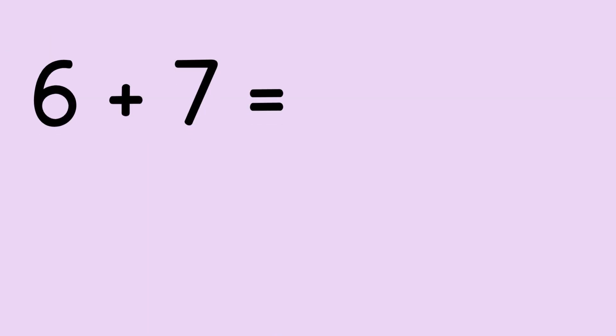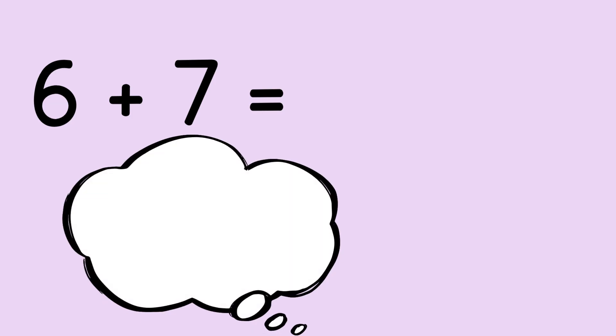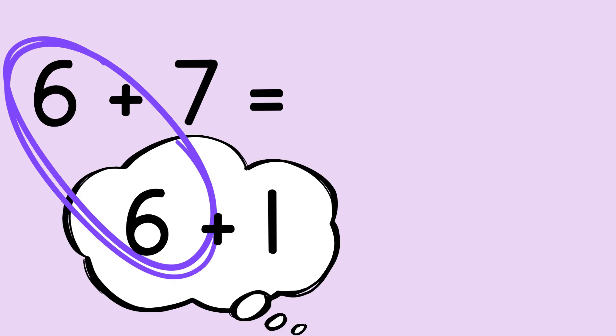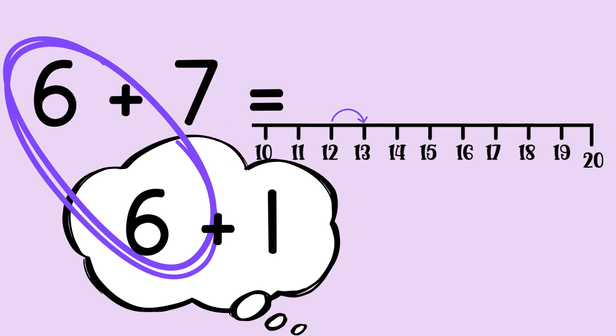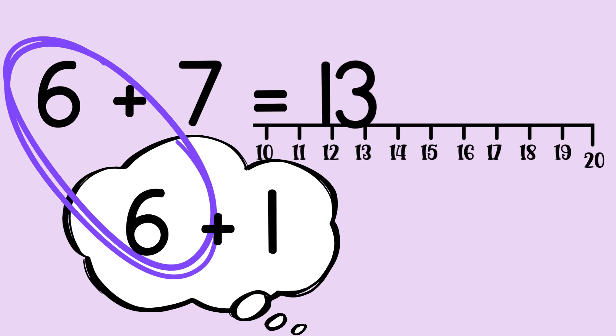Here's six plus seven. So let's think about seven as six and one. And then here's our double. Six plus six, that's 12. And then 12 plus one more is 13.